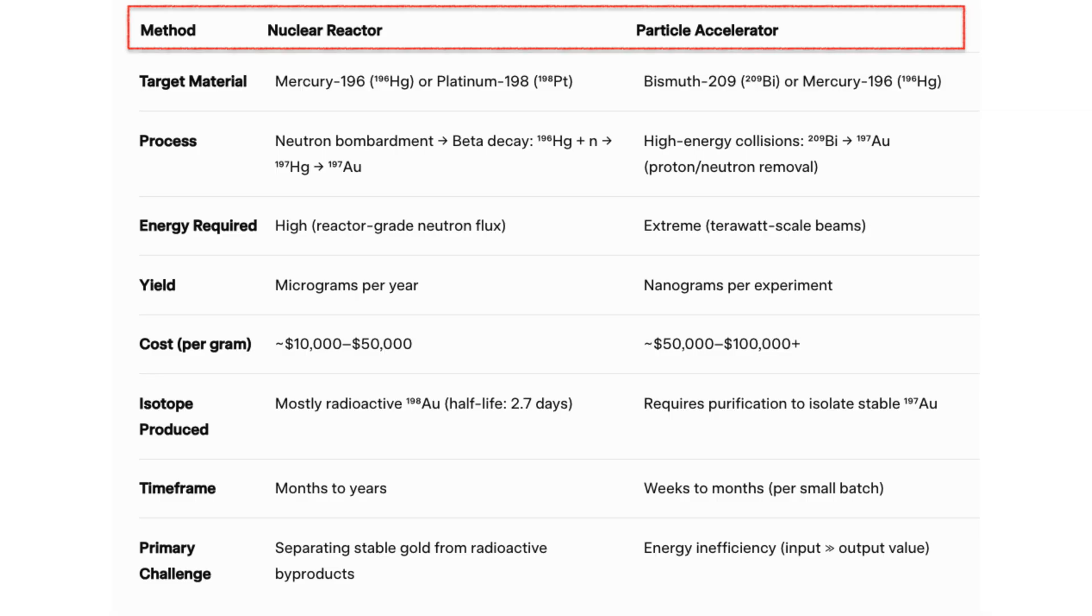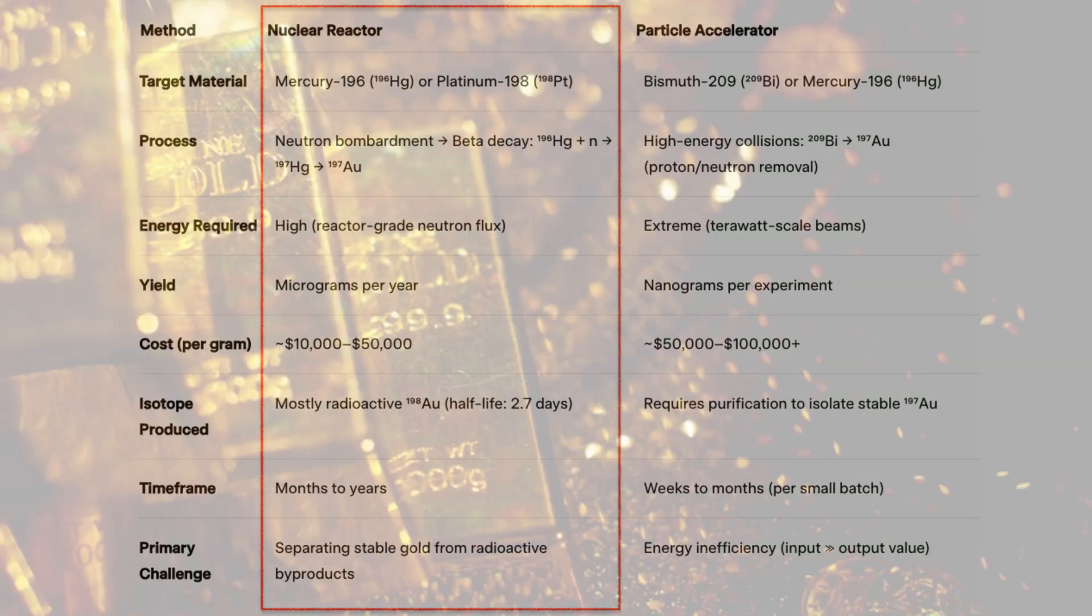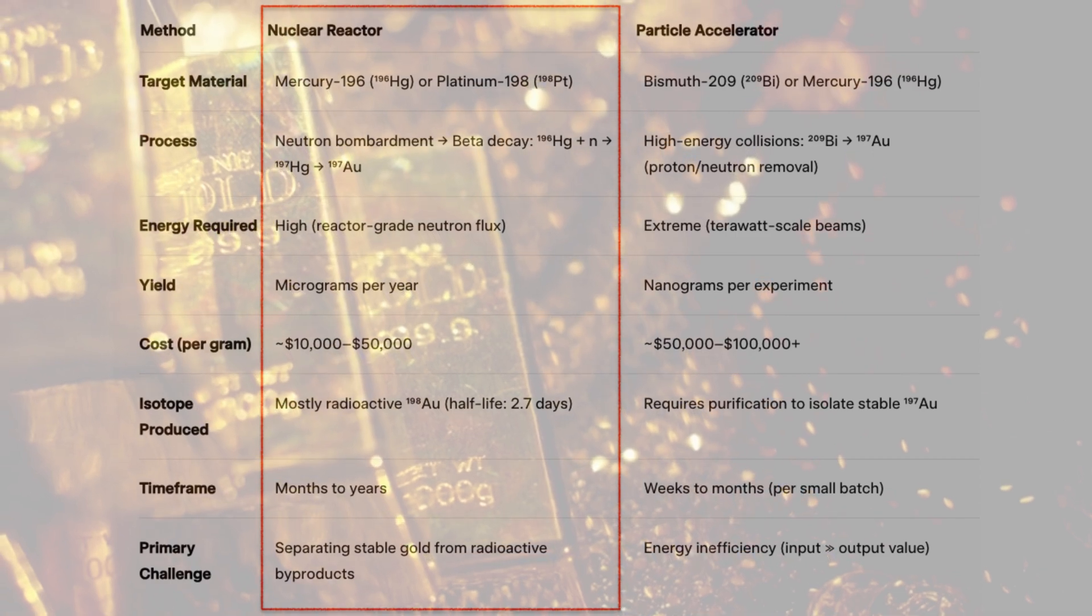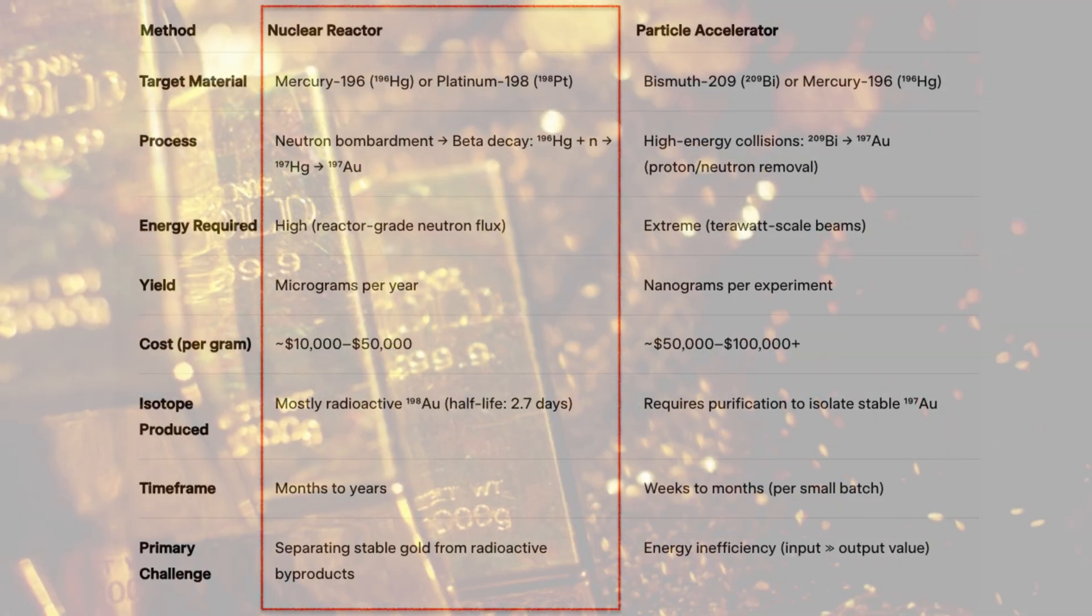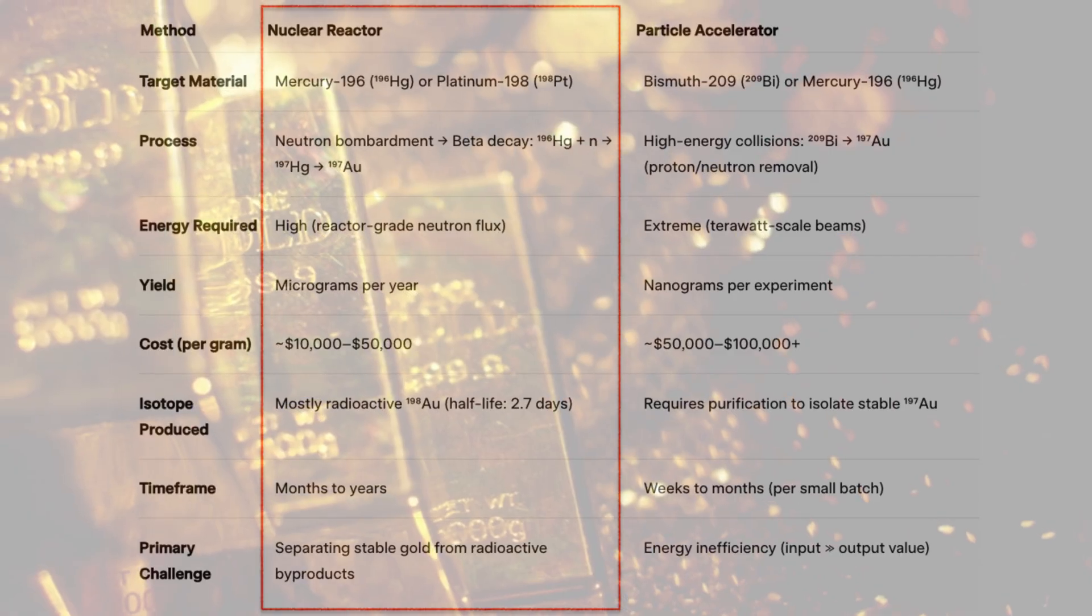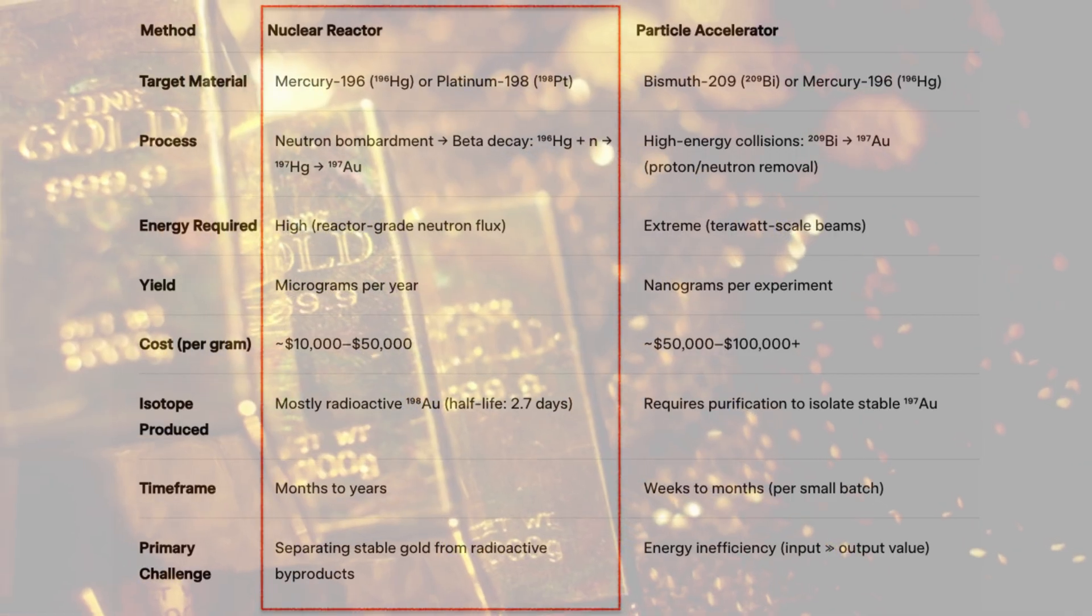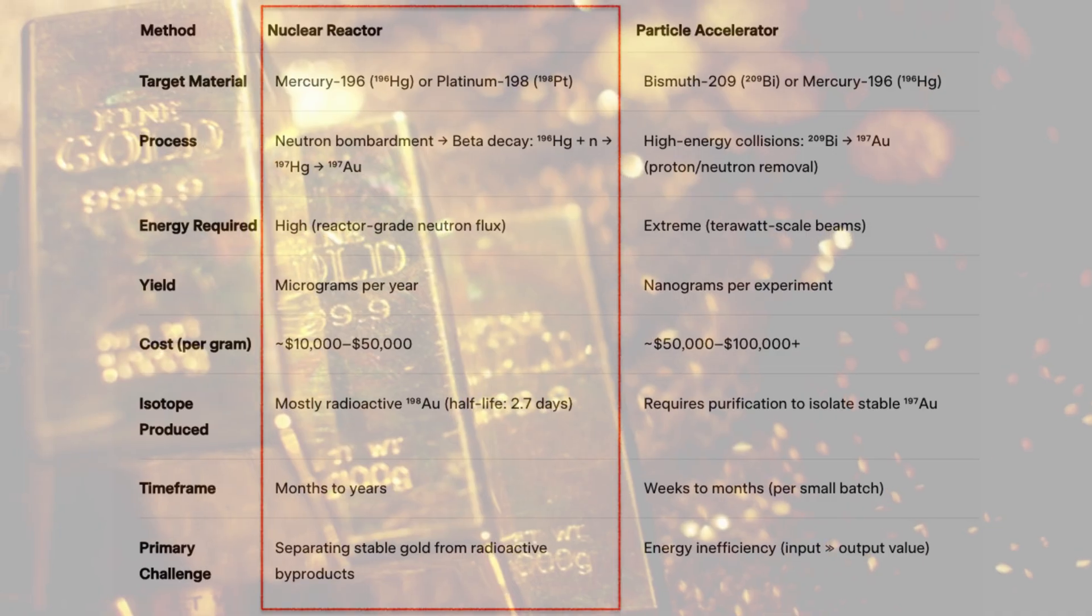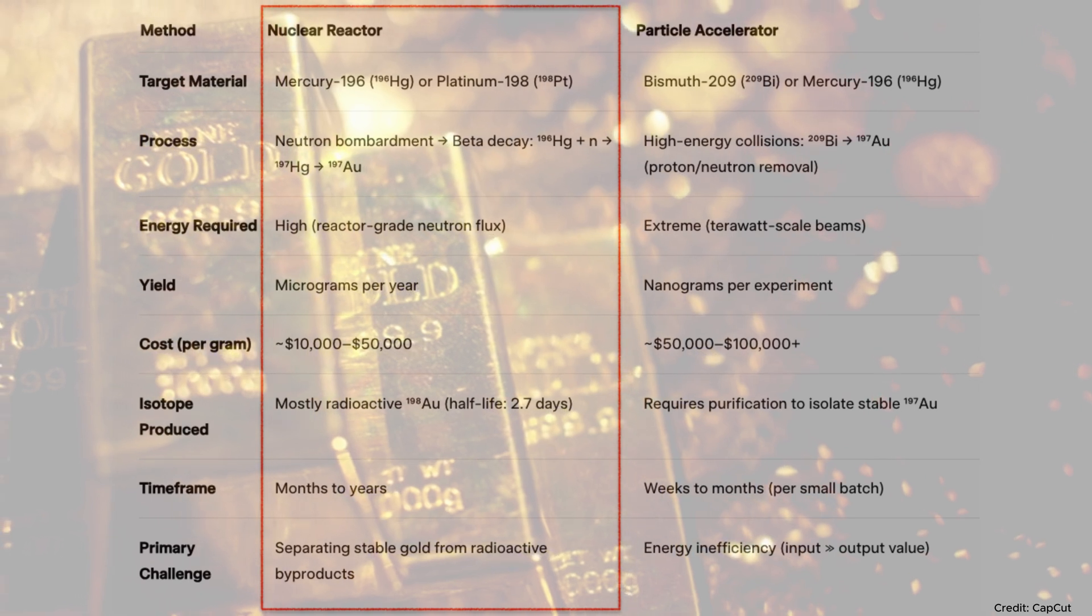Artificial gold production can be approached through two main scientific methods: nuclear reactors and particle accelerators. In a nuclear reactor, scientists can bombard atoms like mercury-196 or platinum-198 with neutrons. This process induces beta decay which can transform mercury into gold. For instance, mercury-196 absorbs a neutron and becomes mercury-197, which then undergoes beta decay to become gold-197, the only stable isotope of gold. The problem is that this process requires powerful high-flux reactors and results in microscopic yields, far too small for commercial use.